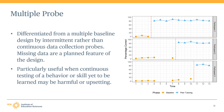The multiple probe design is a variation of the multiple baseline design, differentiated by intermittent rather than continuous data collection probes. It is important to note that this intermittent data collection is a planned feature of the design. Missing data due to classroom absences or other uncontrollable factors does not make a multiple baseline design a multiple probe design. Rather, multiple probe designs are commonly used when continuous testing of a behavior or skill not yet learned could be harmful or costly, so researchers intentionally plan to collect baseline data at the minimum amount necessary to establish an ongoing pattern of behavior.